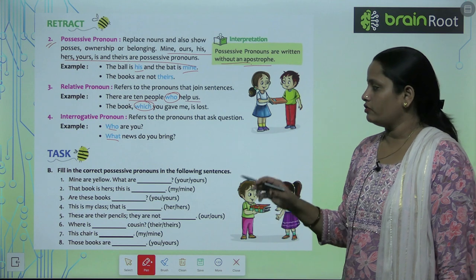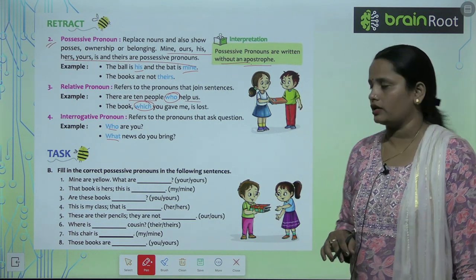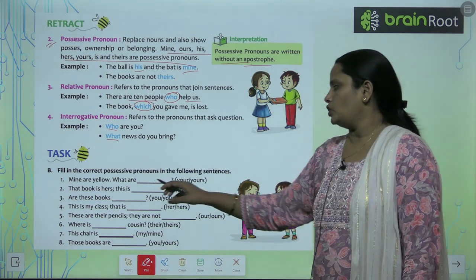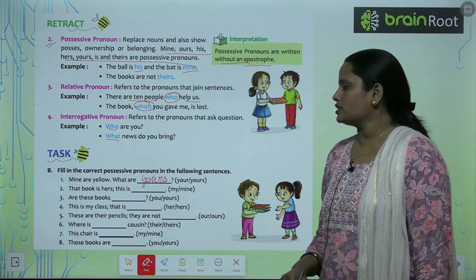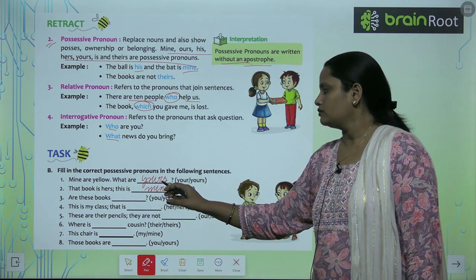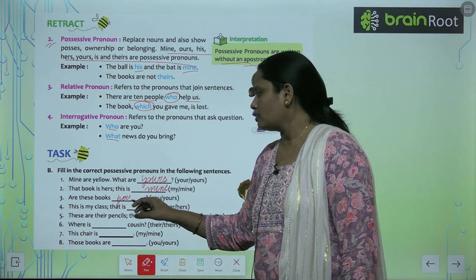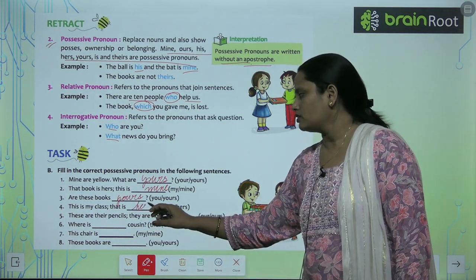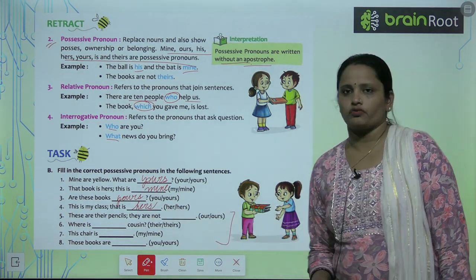Now let's do Exercise B: Fill in the correct possessive pronouns in the following sentences. Mine are yellow, what are yours? That book is hers, this is mine. Are these books yours? This is my class, that is hers. Complete the rest of the questions similarly.